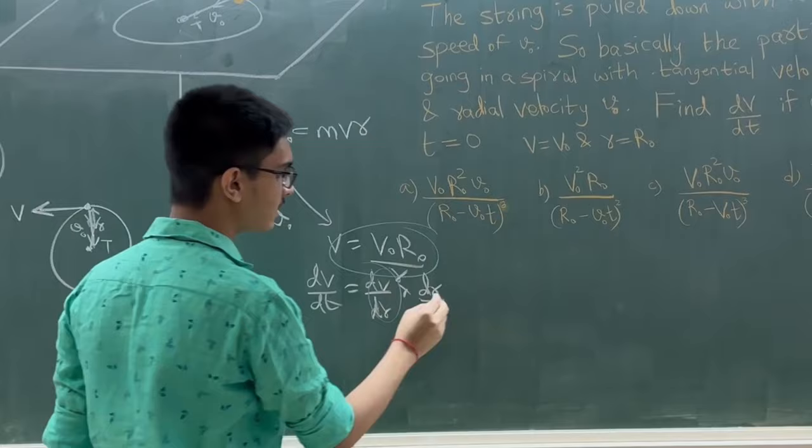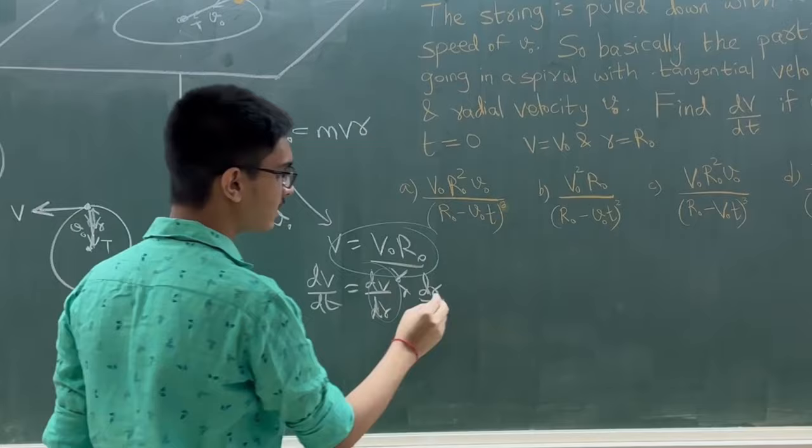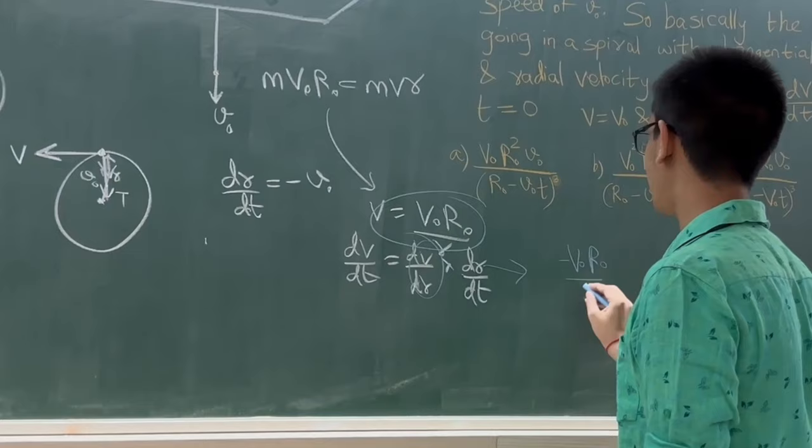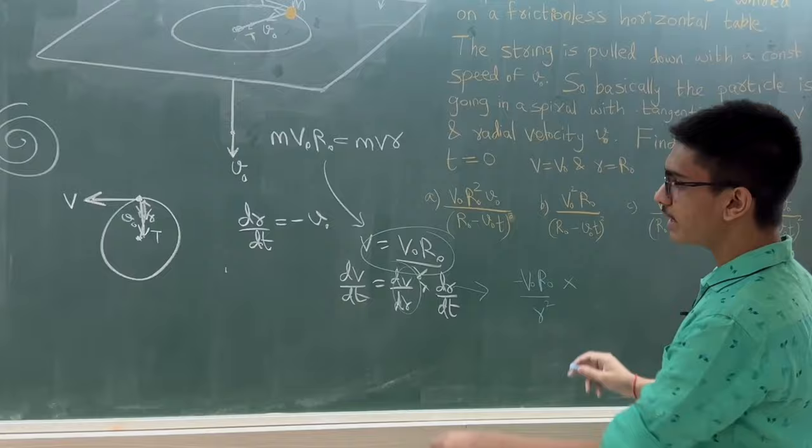Now, dv/dr is minus v₀·r₀/r². And dr/dt is minus u₀.